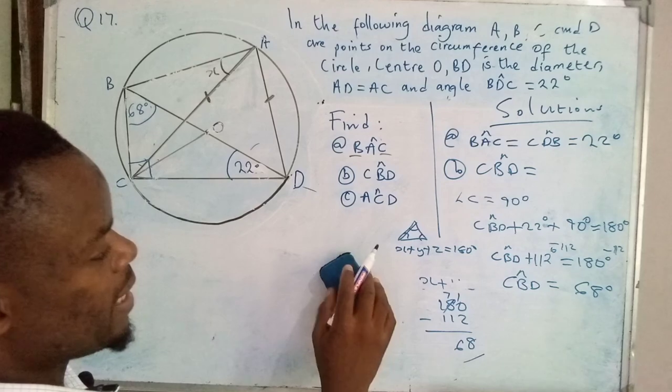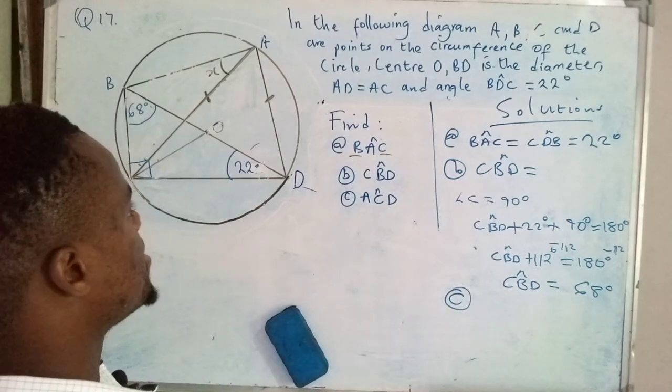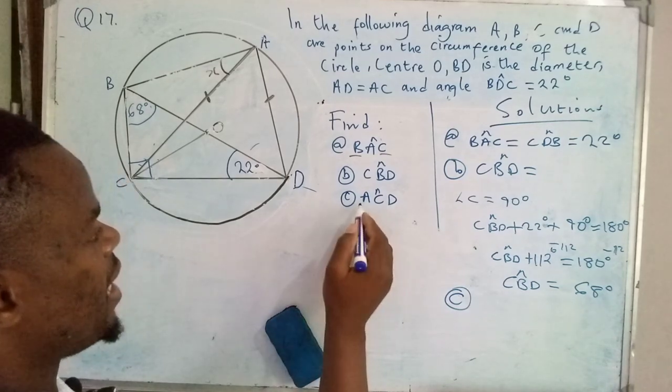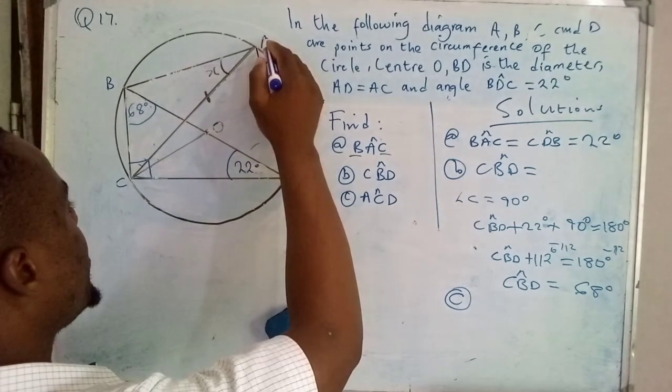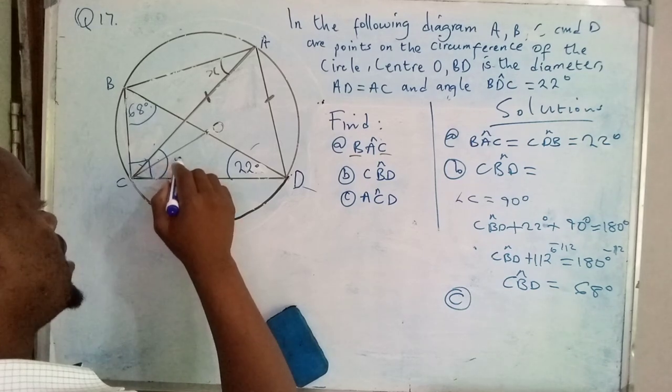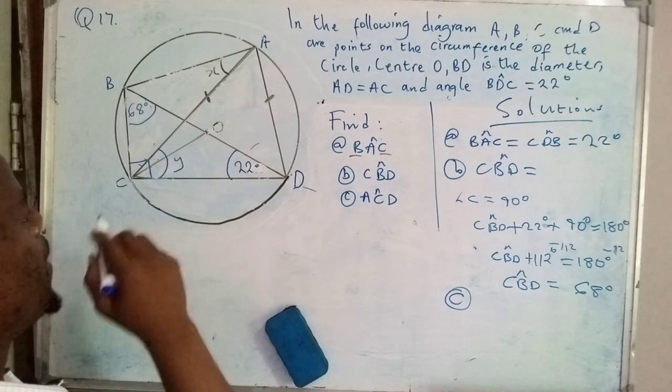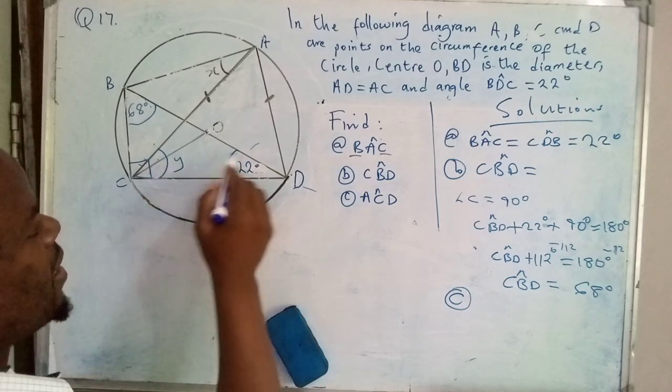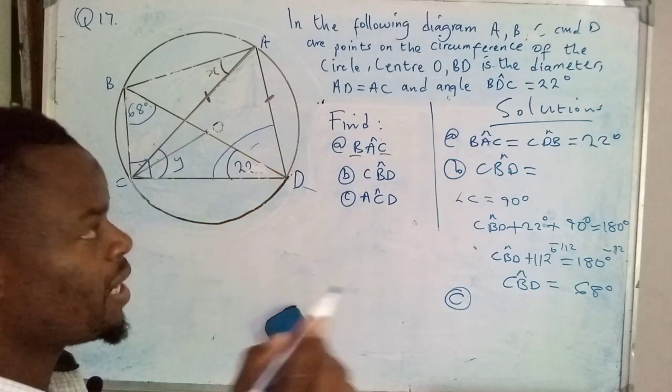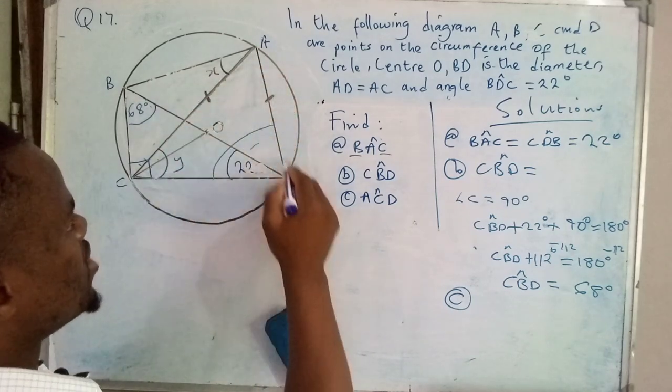After having determined that one, we can now move on to the last question, which is C. Determine the value of the angle here, which I will name Y. So what you need to know is this: this angle and the entire angle from here to there are the same. They must be equal because this triangle here is an isosceles triangle.